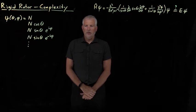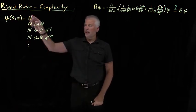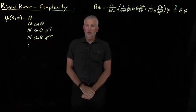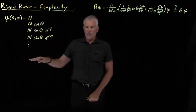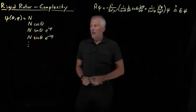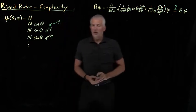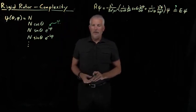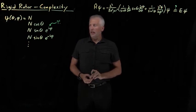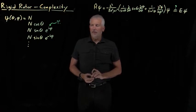In thinking about the rigid rotor as a model for diatomic molecules, we have a Schrödinger equation that describes the rigid rotor, and we've seen a few solutions to it. There's a large number of these, but the first few simplest ones are shown here. We have the somewhat mysterious fact that some of those solutions appear to have i, the square root of negative 1, in them. Why would those solutions need to have a complex number in them?